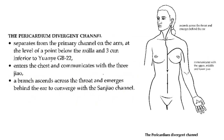The pericardium divergent channel separates from the primary channel on the arm at the level of a point below the axilla and pre-cun inferior to GB22. A branch ascends across the throat and emerges behind the ear to converge with the sanghjao channel.